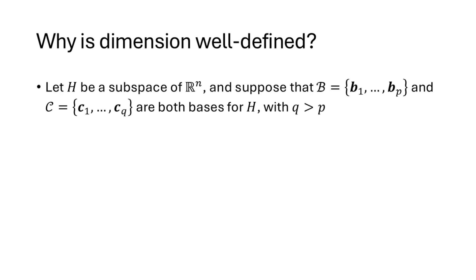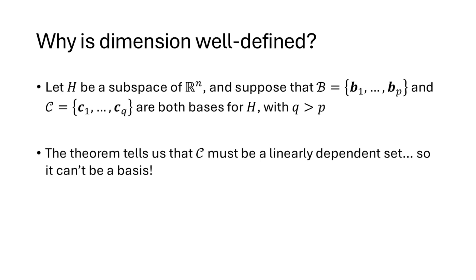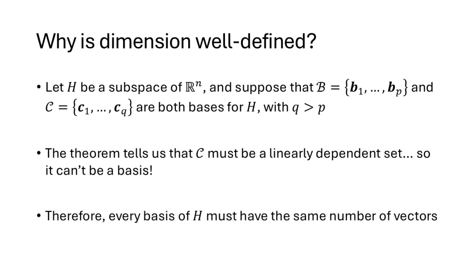So why does this theorem help us prove that dimension is well-defined? Imagine we have two bases with a different number of vectors: script B containing B1 through Bp, and script C containing C1 through Cq, where Q is greater than P. From the previous theorem, since script C has more vectors than the basis B, script C must be linearly dependent. But it can't be linearly dependent because it's a basis. That contradiction tells us this can't happen, and therefore every basis for a given subspace must have the same number of vectors — and we call that number the dimension.